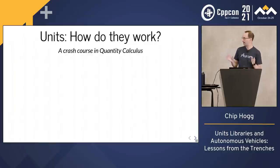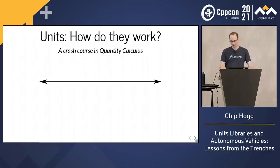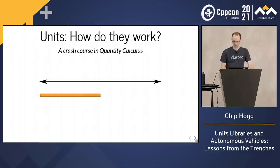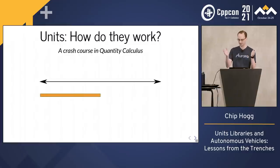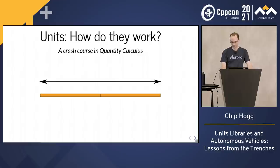A quantity is something that is measured, like the distance between two points, or the temperature change in a pot of water. To actually perform this measurement, you need a unit, which is just some other quantity that we can use as a reference. So here's another distance which we've singled out and called the foot. We can see that if we stack two of these end-to-end, it gives us the same distance as the first one. So this quantity equals two feet — two is the value, feet is the unit.